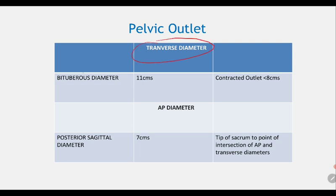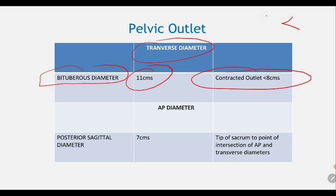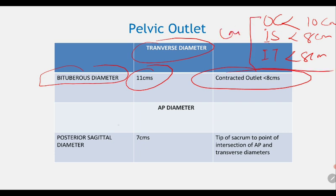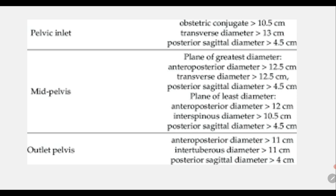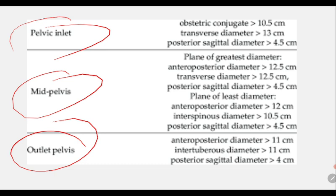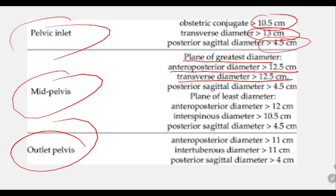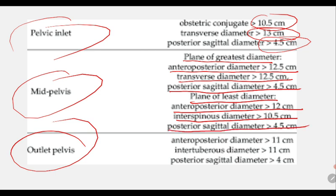Pelvic outlet diameters: the intertuberous diameter is 11 cm (contracted if less than 8 cm); the interspinous diameter is contracted if less than 8 cm; the AP diameter (posterior sagittal) is 7 cm. Summary of key diameters: inlet — obstetric conjugate more than 10.5 cm, transverse more than 13 cm, posterior lateral more than 4.5 cm. Mid pelvis greatest plane — transverse more than 12.5 cm, posterior sagittal more than 4.5 cm. Least pelvic dimension — AP 12 cm, interspinous 10.5 cm, posterior sagittal 4.5 cm. Outlet — AP 11 cm, intertuberous 11 cm, posterior sagittal more than 4 cm.